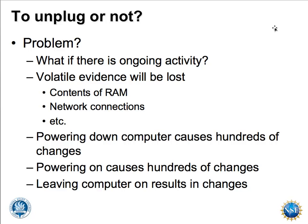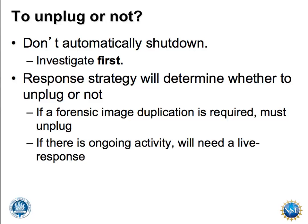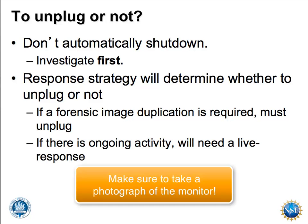What are the issues? If there's ongoing activity, we lose volatile evidence. If we power down gracefully, it causes hundreds of files to change. Powering on also causes hundreds of files to change. Leaving the computer on results in changes. So the theory is: don't just automatically shut down or pull the plug — investigate first. Know if there's anything ongoing; try to get information from the suspect if you can. Look at the screen — is anything going on that may indicate illegal activity or information in RAM that you might want to capture? Your response strategy will determine whether to unplug the computer or not.